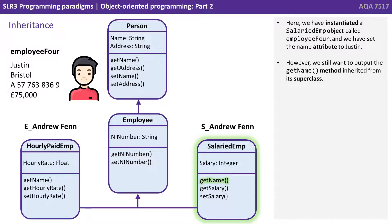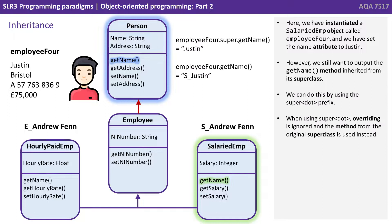Here we have instantiated a salaried employee object called employee4 and set the name attribute to Justin. However, we still want to output the getName method inherited from the superclass. We can do this by using the super dot prefix. When using super dot, overriding is ignored and the original method from the original superclass is used instead.